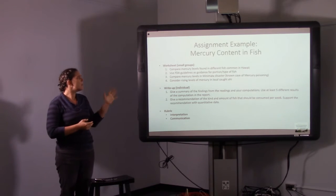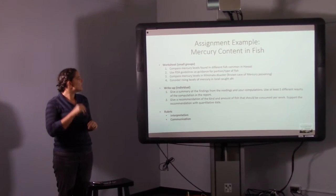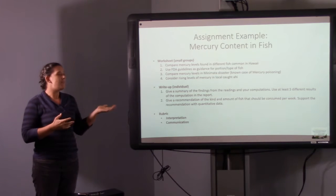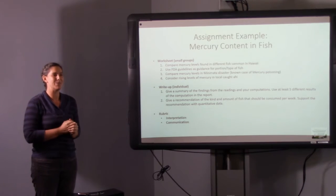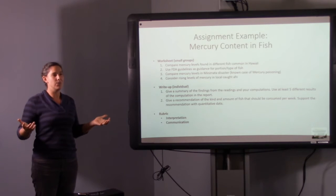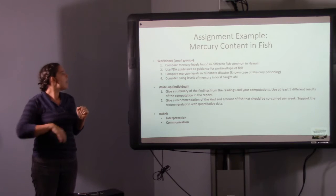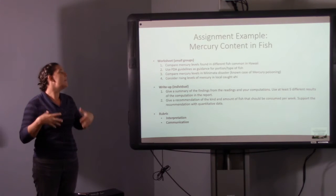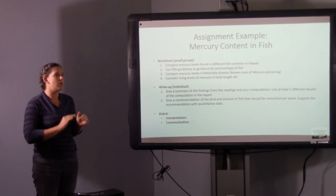I have them compare mercury levels found in different fish common in Hawaii, and I used FDA guidelines, and also I found some research for more of the uncommon fish that are common here in Hawaii. So I have them sort of compute how much mercury is in a pound of all three kinds of fish, and compare the different fish, use the FDA guidelines, so how much ahi could you eat versus salmon. And that to me seemed very low in practical standards. I wanted also them to compare it to sort of a known case of mercury poisoning, which is one extreme.